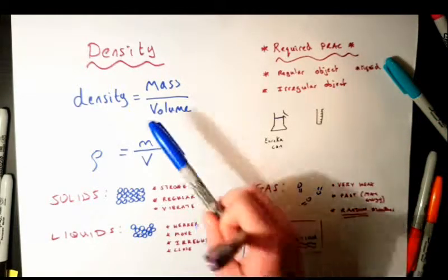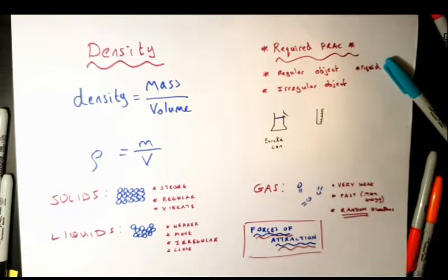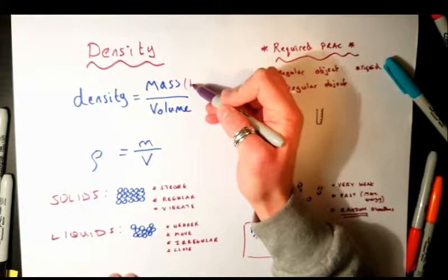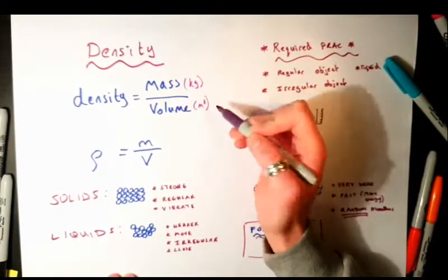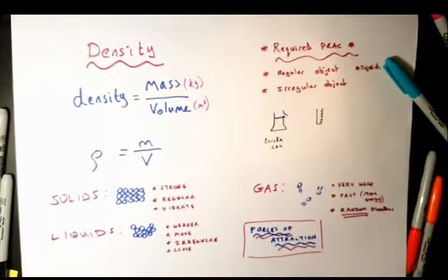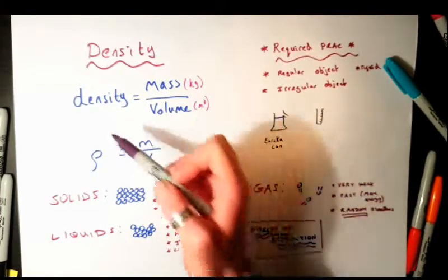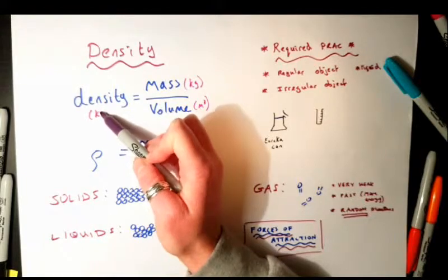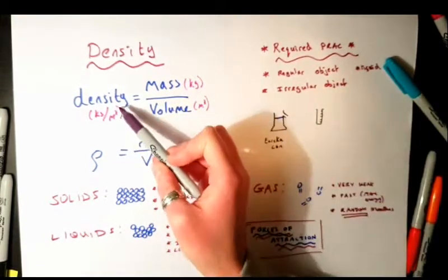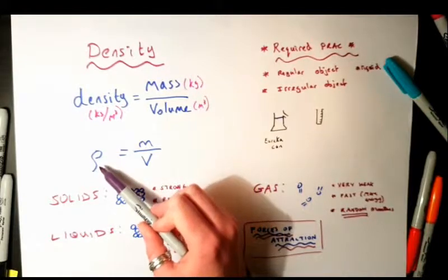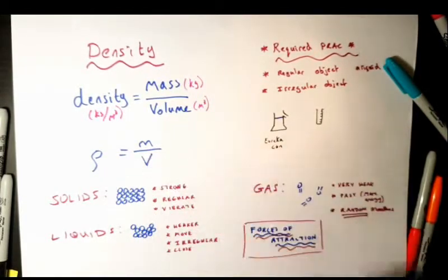The equation for density is mass divided by volume. Mass must always be in kilograms. Volume would be in metres cubed unless given otherwise, making the unit for density kilograms per metre cubed. We use the symbol rho — a curly P — for density. M is for mass and V is for volume.